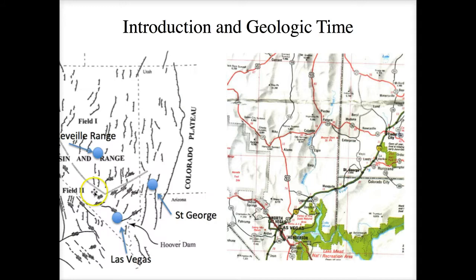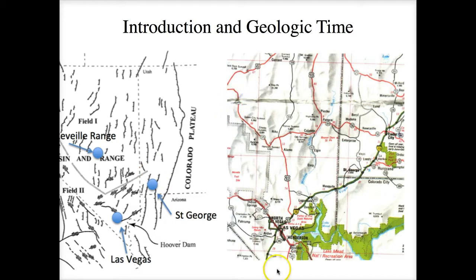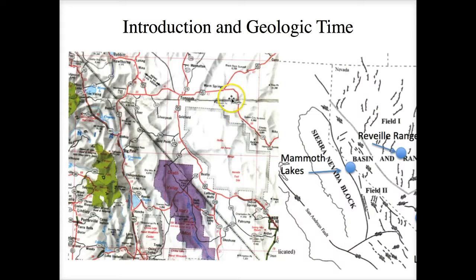Combining these two maps, we see Las Vegas, St. George, the Grand Canyon region, the Reveille Range, working our way west into the Mammoth Lakes region, then back through Death Valley and back to Las Vegas.